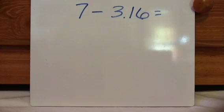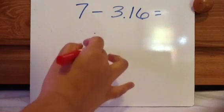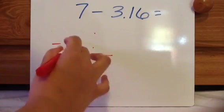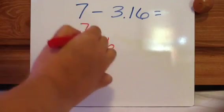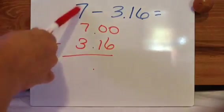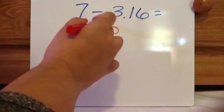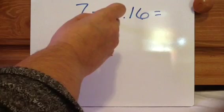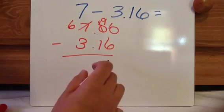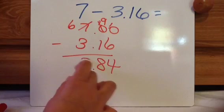Last one, and then we're going to do checkpoint. So 7 minus 3.16. So I know 3.16 goes there. Now the 7, it's like $7. 7 whole. So 10, 10, 6. That gets borrowed from, so that's going to be 9. So 10 minus 6 is 4. 9 minus 1 is 8. 6 minus 3 is 3.